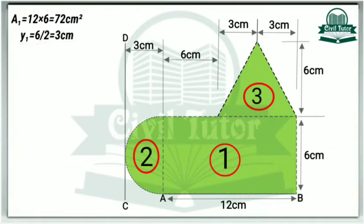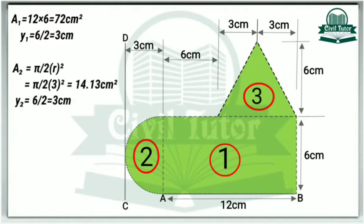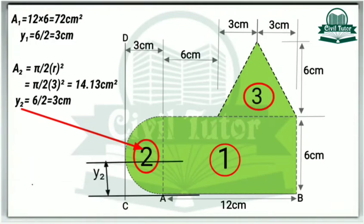A2 is the area of this semicircle having a radius of 3 centimeter. So A2 will be equal to pi by 2 R square. On substituting R equal to 3 centimeter we will get the value of A2 equal to 14.13 centimeter square. Let Y2 be the centroidal distance of this area 2 from bottom line AB. Y2 will be equal to 6 centimeter divided by 2, equal to 3 centimeter.